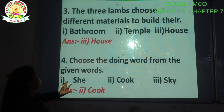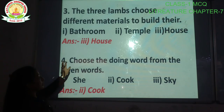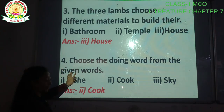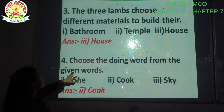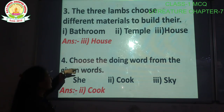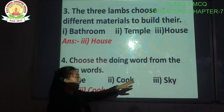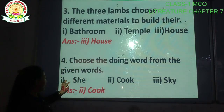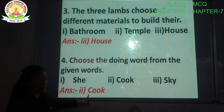Question number three: the three lambs choose different materials to build their house. Teen lambs ko apna-apna ghar banana tha, alag-alag samaan se. Question number four: choose the doing words from the given words. Yahan jo words diye hain, in mein se doing words nikalna hai. Options: C, cook, sky. The doing word is option number two, cook. Cook is the correct option.